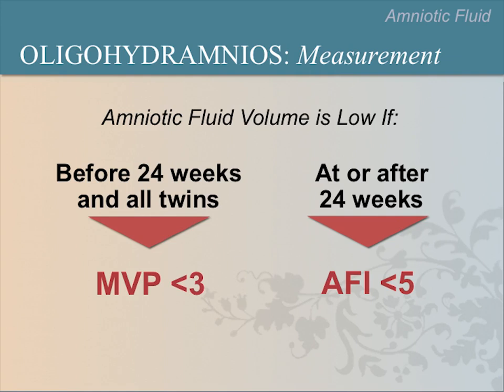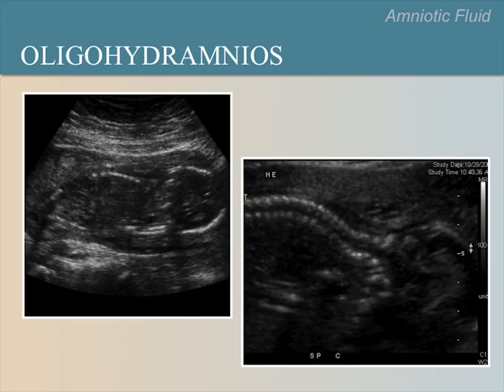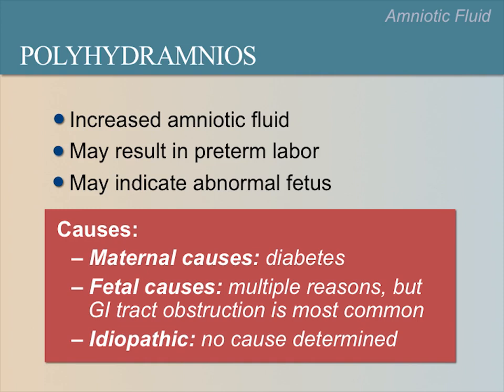When there is too much amniotic fluid, an opposite condition results called polyhydramnios. Too much amniotic fluid may result in preterm labor or indicate an abnormal fetus. Polyhydramnios can also be caused by diabetes in the mother or a fetal condition like an obstruction of the esophagus or intestines. It is also possible that no cause is found, which is called idiopathic.